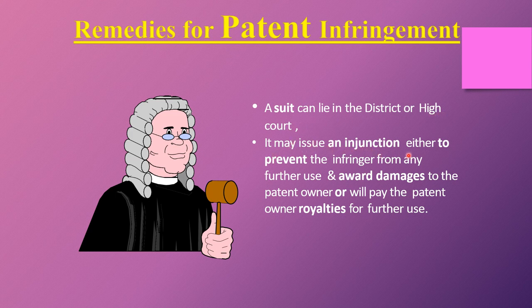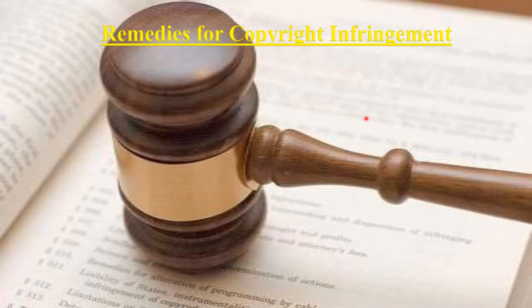Remedy for patent infringement: a suit can lie in the district or high court. It may issue an injunction to prevent the infringer from any further use and award damages to the patent owner, or require the infringer to pay the patent owner royalty for further use. Remedies for trademark infringement: a suit can lie in district or high court; punishment extends from six months to three years; a permanent ban on engaging in commercial activities. Remedy for copyright infringement: a suit can lie in the district court or high court. Under Section 63 of the Copyright Act 1957, it is punishable with imprisonment up to three years and a fine as per the claim.